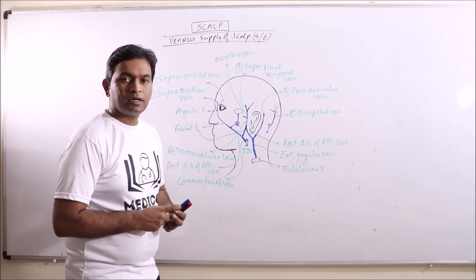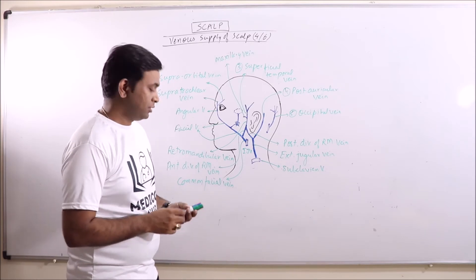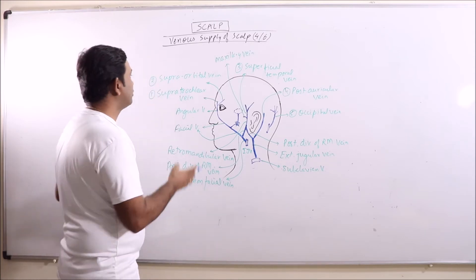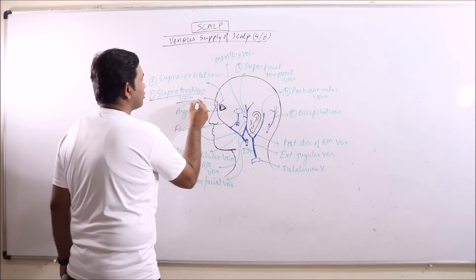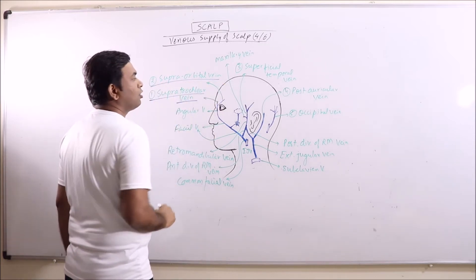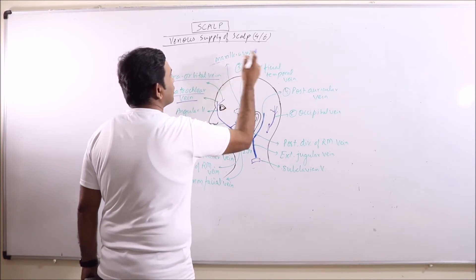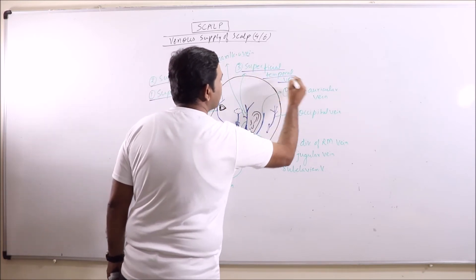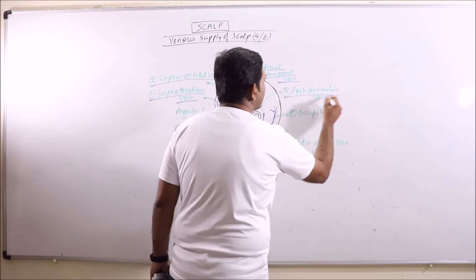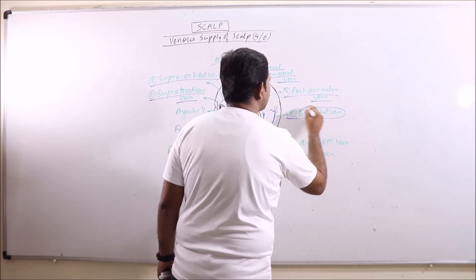So this is the venous drainage of scalp which is mainly contributed by supra-trochlear vein, supra-orbital vein, superficial temporal vein, posterior auricular vein, and occipital vein.